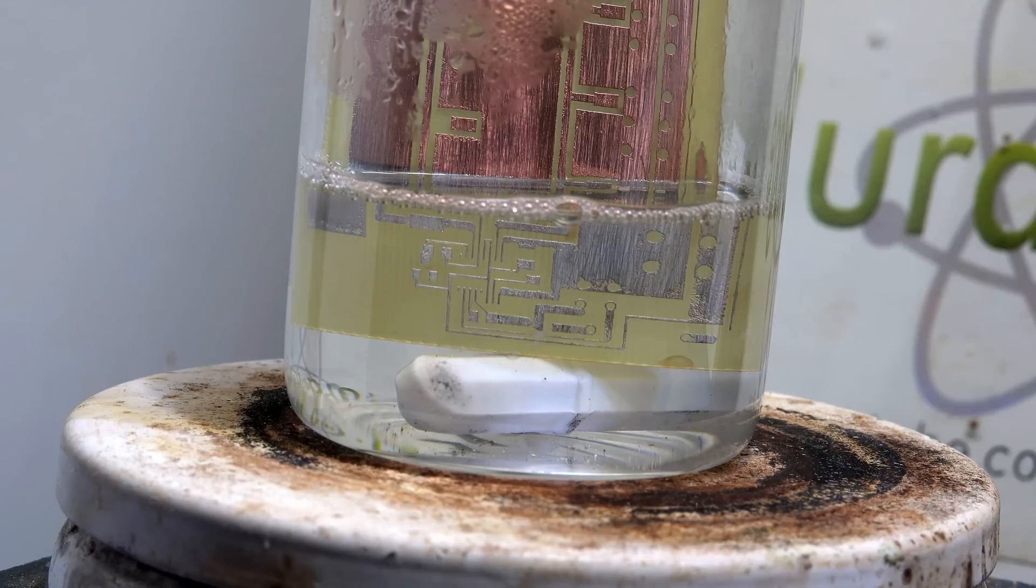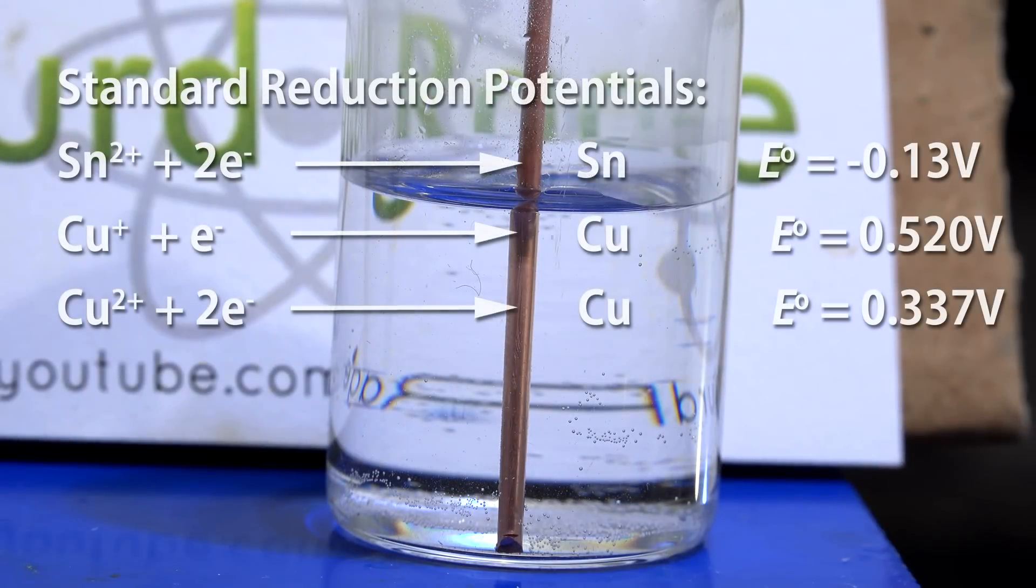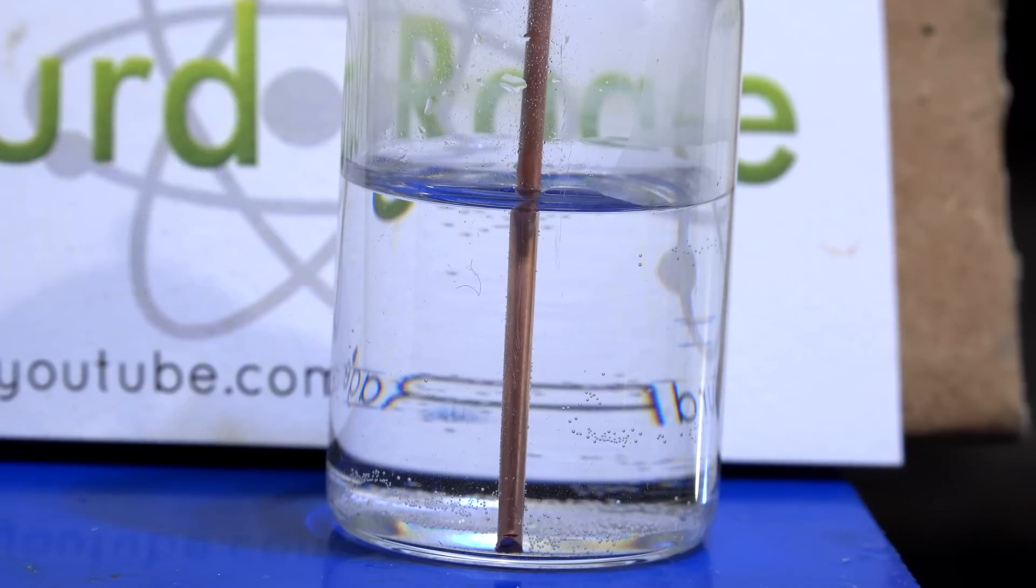So how is this happening? As demonstrated before, tin does not displace copper. The reduction potential for tin is lower than that of copper. But we must remember that standard reduction potentials only apply for idealized solutions containing only the ions we're examining and water. If we mix in other additives we can change the reduction potentials.